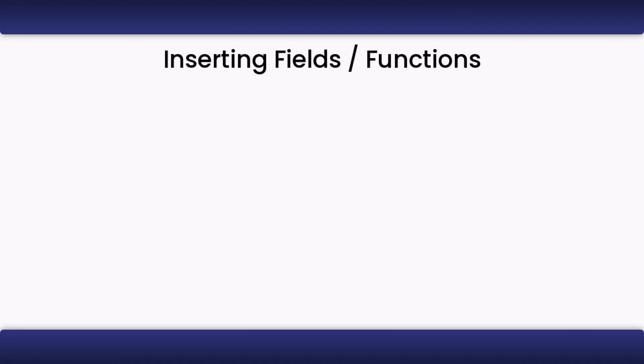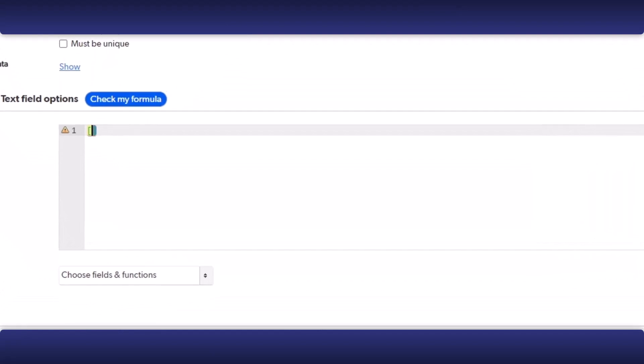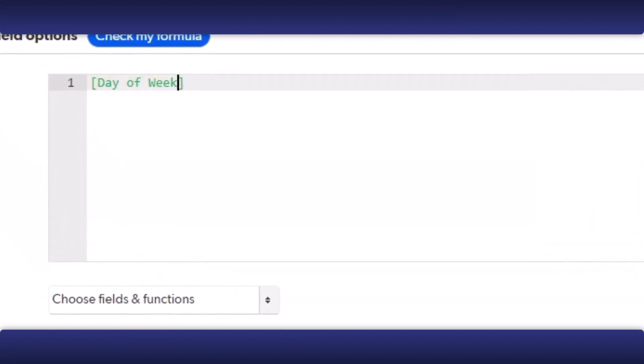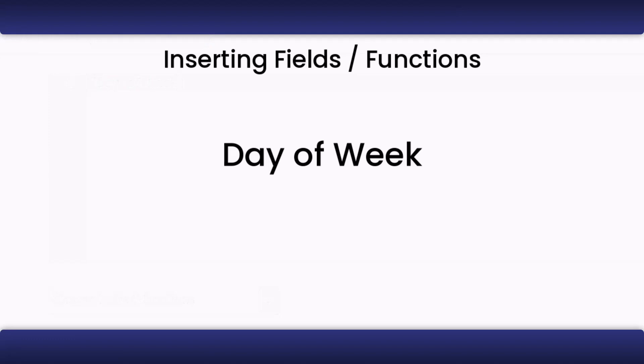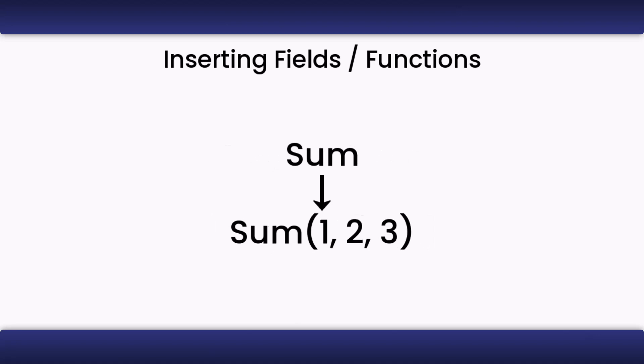If you have a field or function you want to add somewhere in your formula, there are three main ways to do it. First, you can simply type the name of the field or function in. This is easiest when you know the exact name of the field or function and the name is short. If you are adding a field, you will have to type in square brackets around the name. If it is a function, you will have to type in parentheses after the function's name and then supply it arguments, if applicable.